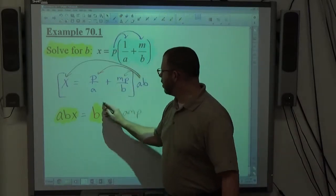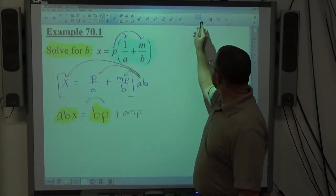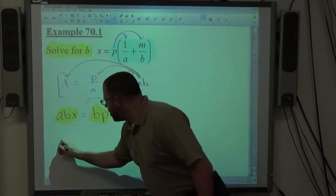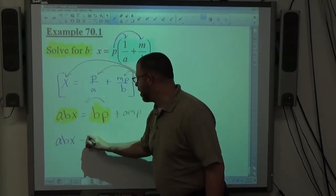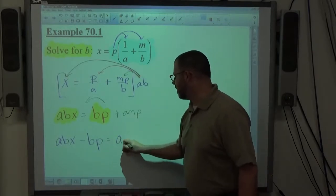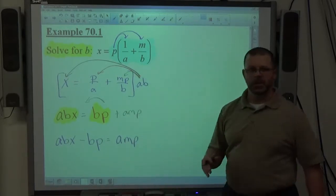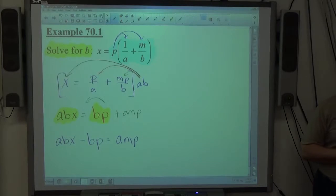I'm going to take BP over to the left. So ABX is staying where it's at, it stays positive. BP is moving across, it becomes negative. AMP is staying where it's at, it stays positive.